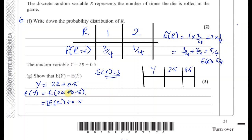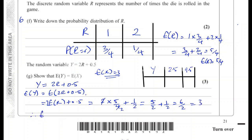This is a transformation of the expected value of R. The mean is affected by both multiplication and addition, so E(Y) = 2 × E(R) + 0.5. That gives us 2 times 5 over 4 plus 0.5, which is 5 over 2 plus 1 over 2, which is 6 over 2, which is 3. Therefore we've shown that the expected value of Y equals the expected value of X, because they're both equal to 3. That's part G.